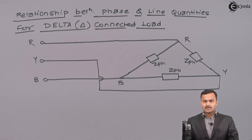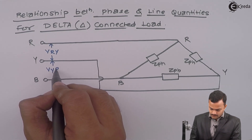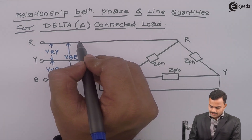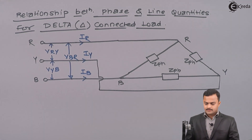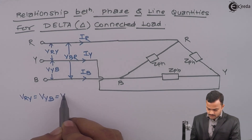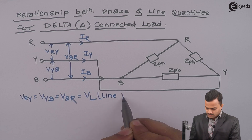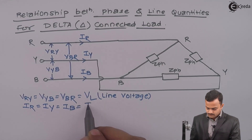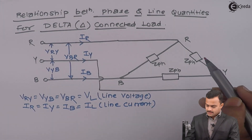Let's list out our line-side quantities: line voltages V_RY, V_YB, and V_BR, with line currents I_R, I_Y, and I_B. V_RY, V_YB, and V_BR all have the same magnitude V_L, which is the line voltage. I_R, I_Y, and I_B are the line currents. Now let's go to the load side.